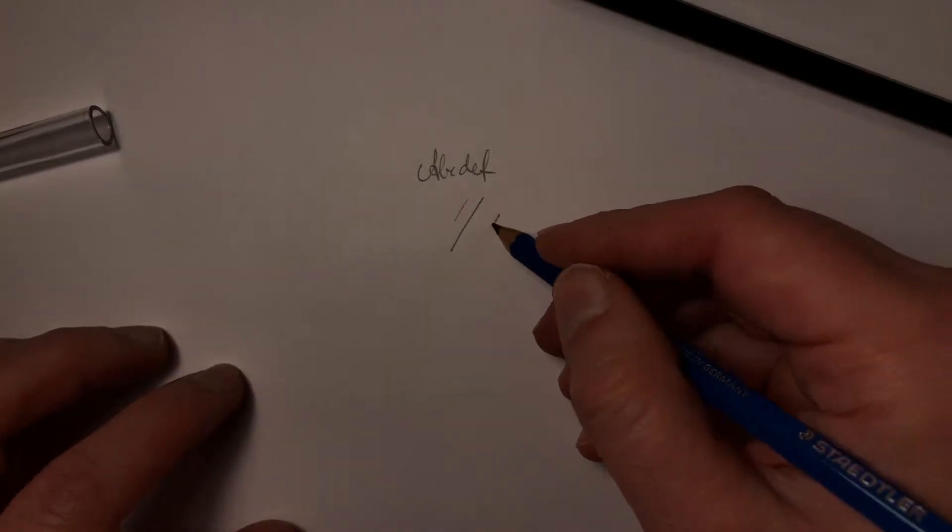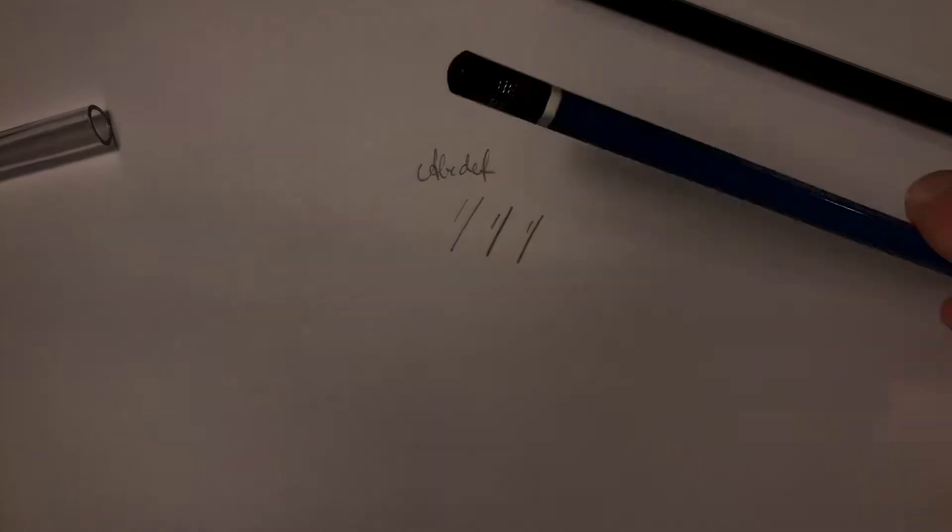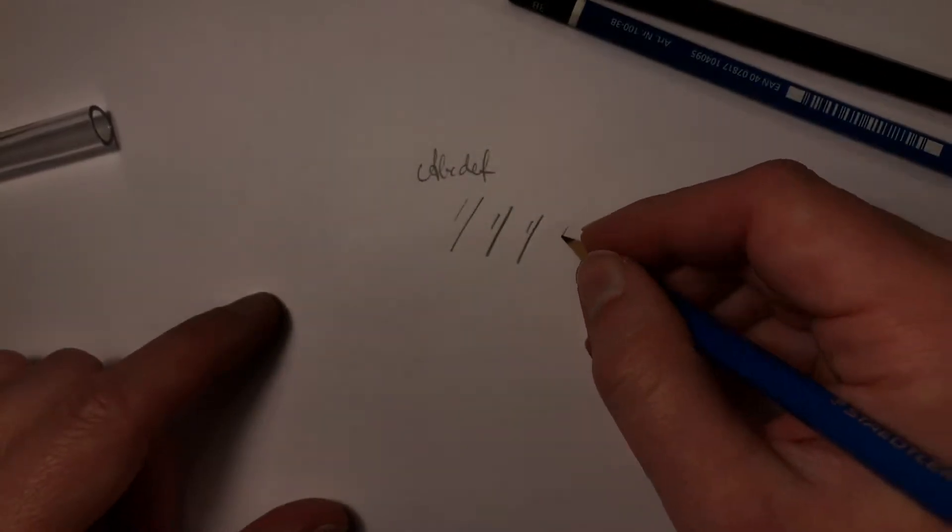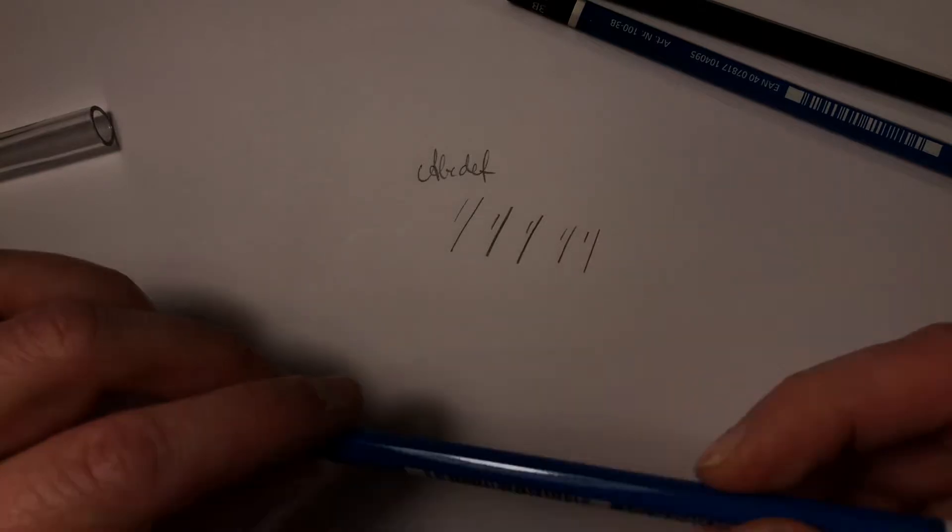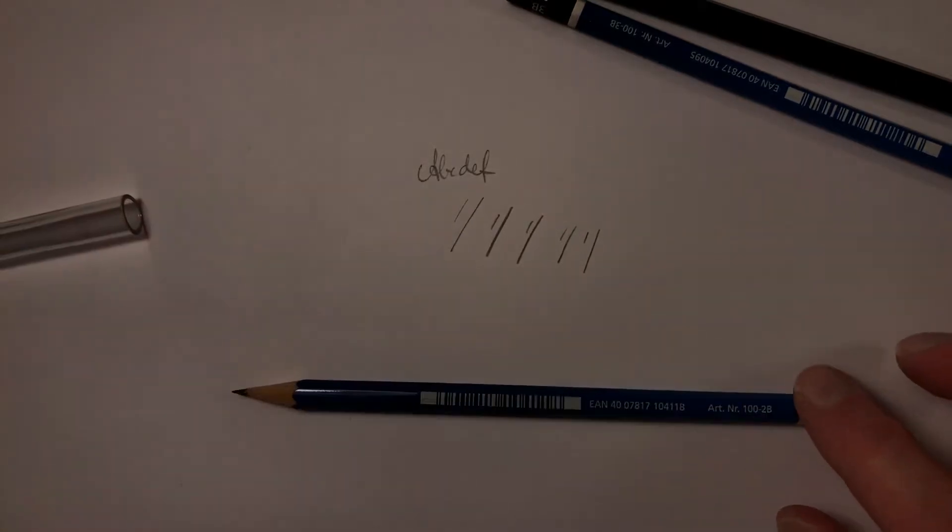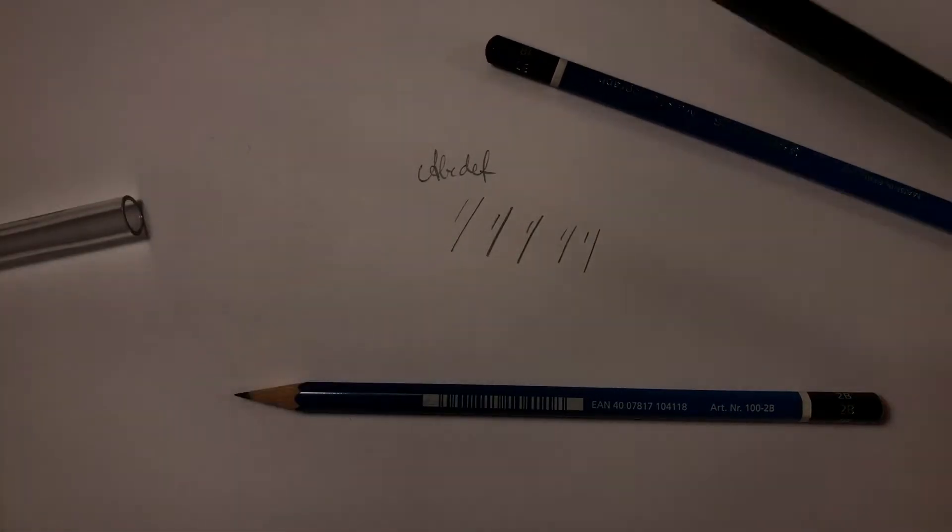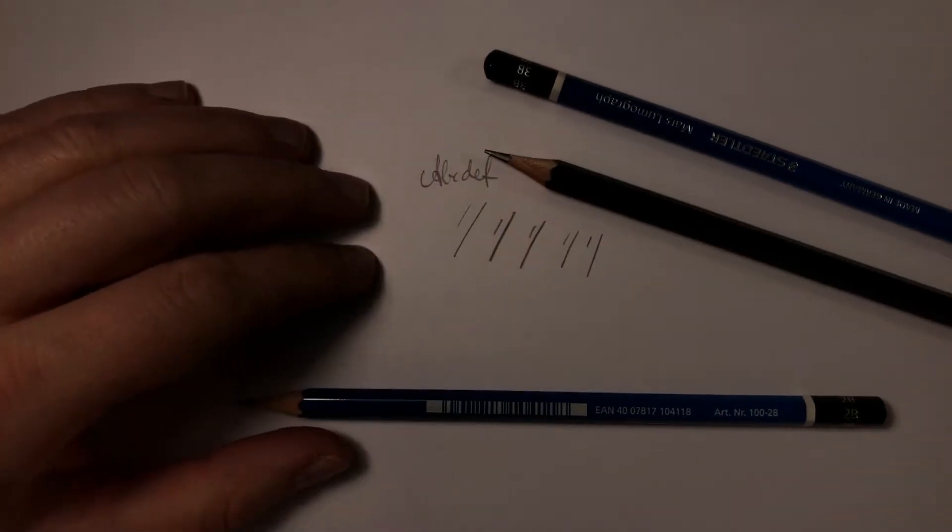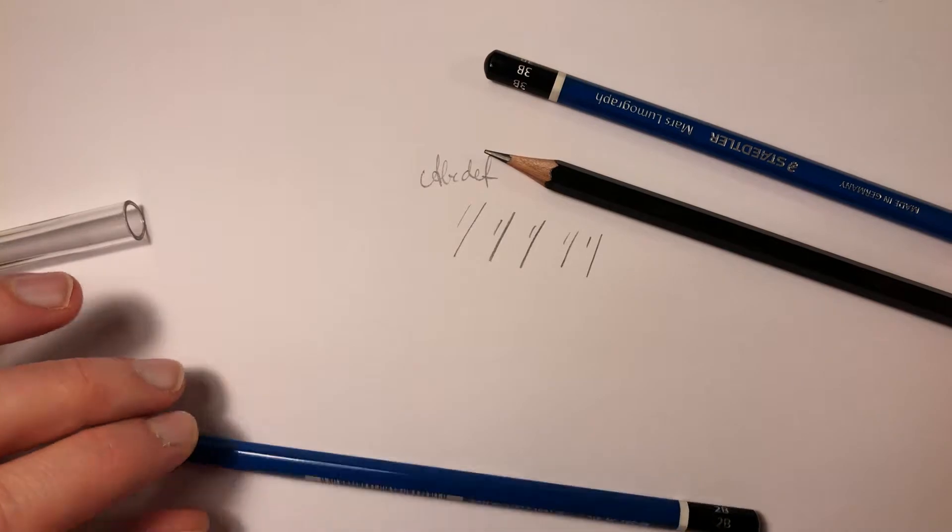Let's try the same thing. So 3B is darker. 2B is quite similar. Yeah, let's change the light a bit. Maybe this is a bit more acceptable.